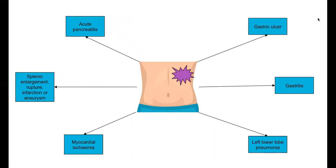The differential diagnoses for left lower quadrant and left upper quadrant pain are shown here. A well-taken history with good differentials will be vital to guide the necessary investigations for diagnosis. The characteristics of abdominal pain can further divide your differentials. If your patient comes with colicky abdominal pain, it is more likely to come from obstruction of hollow organs, such as bile duct, ureter, or bowel.